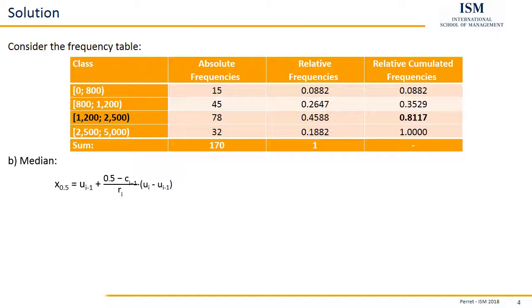And this is divided by the relative frequency r_i, the relative frequency of the median class, which here is 0.4588. And finally, we only have to multiply this with u_i minus u_i minus one, which is just upper bound of the median class minus lower bound. So more or less the width of the median class.